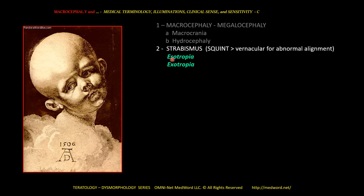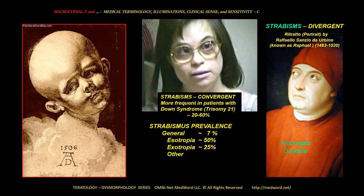Another sign — and signal — that I see is strabismus, or in vernacular, squint. The question would be: is it an exo or esotropia? Exo means outside deviation and eso means inside deviation. This strabismus is quite important as a signal for differential considerations. Strabismus convergent is quite common in children with Down syndrome, or trisomy 21 — twenty to sixty percent of them have it. In the general population, strabismus prevalence is quite high, about seven percent, and most of it is convergent.